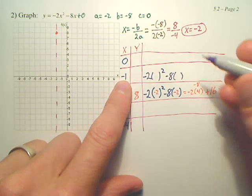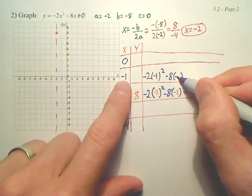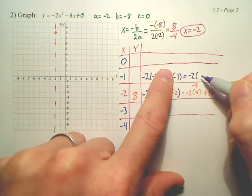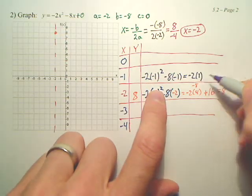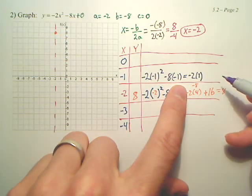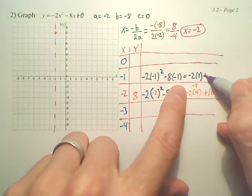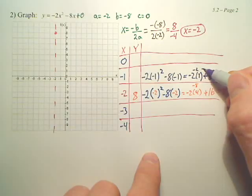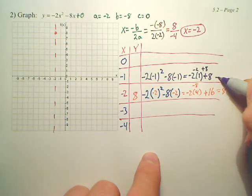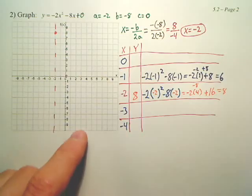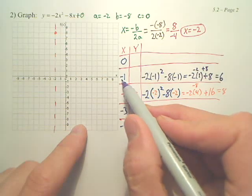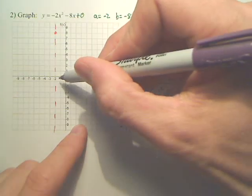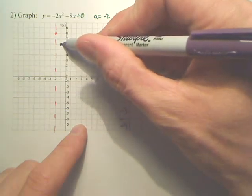What number are we plugging in? Negative 1, according to the table. That becomes negative 2 times negative 1 squared is 1, and negative 8 times negative 1 is positive 8. So I got a negative 2 plus an 8 is 6. So negative 1 goes up 6.